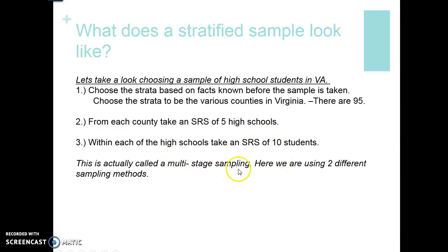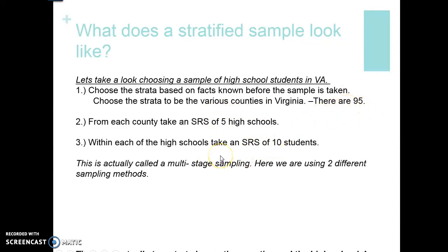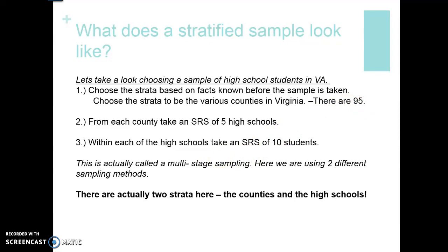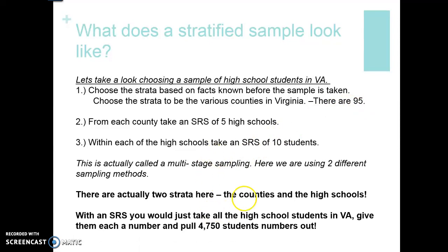This is multi-stage sampling — two different methods combined. First, look at the 95 naturally occurring counties. Then take five high schools from each county. From each of those five high schools, choose 10 students. To figure out how many you'd have total: 95 counties times 5 high schools times 10 students. With a simple random sample, you would just take all the high schools in Virginia, give them each a number, and pull 4,750 students' names. The difference is that stratified sampling ensures you're getting a good representation from each county.